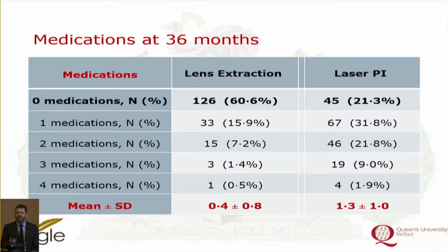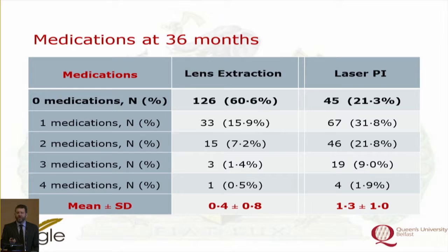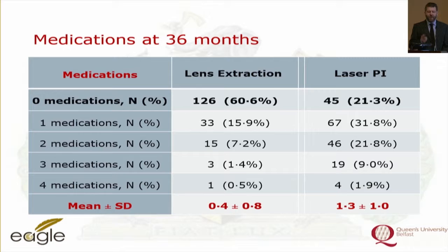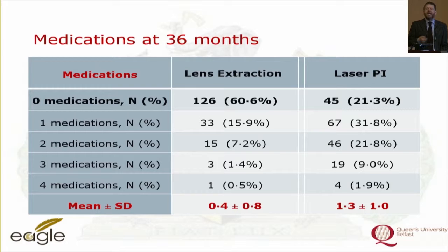The EQ5D quality of life measure showed a significantly small but real improvement for those who had clear lens extraction — phacoemulsification. More interesting was that intraocular pressure was lower in the phaco group. At three years, 60% of phaco patients were drop-free compared to those who had laser iridotomy — a profound effect of lens extraction, notably on clear lenses, not cataract surgery.